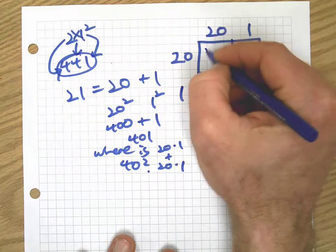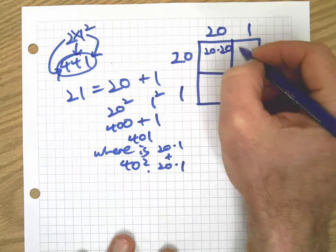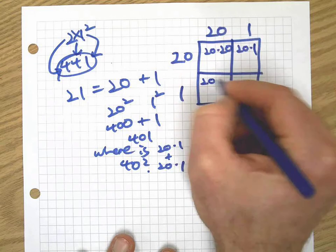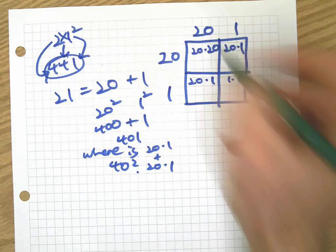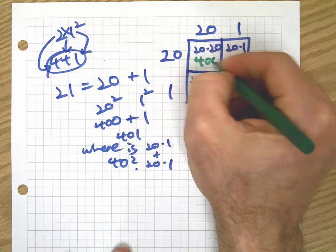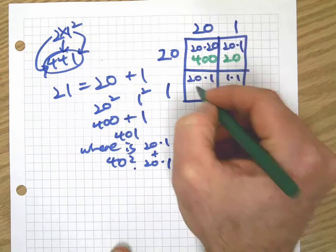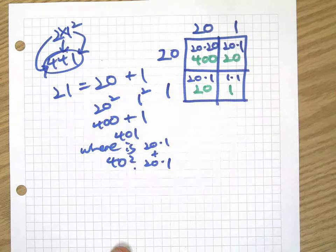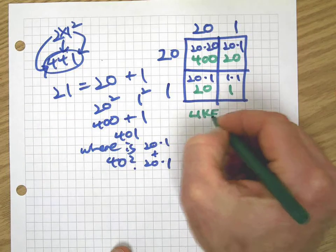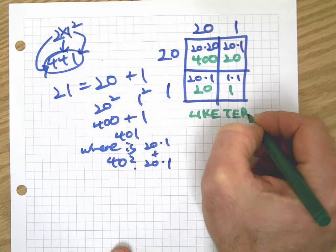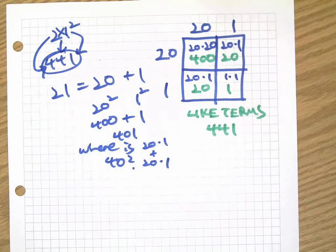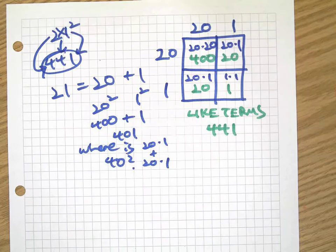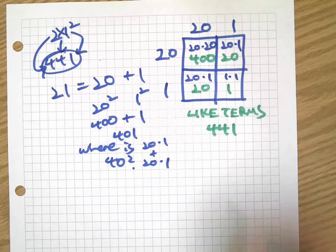And the answer is 20 times 1 plus 20 times 1. And if we do the generic rectangle with this numerical so-called binomial, you can see how this works. There's 21, there's 21, right? 20 times 20, 20 times 1, 20 times 1 again, and 1 times 1. And then when we get our products here, we have that. And since they're all like terms—they're all numbers, there are no variables here—so we can add them all together, we get that.